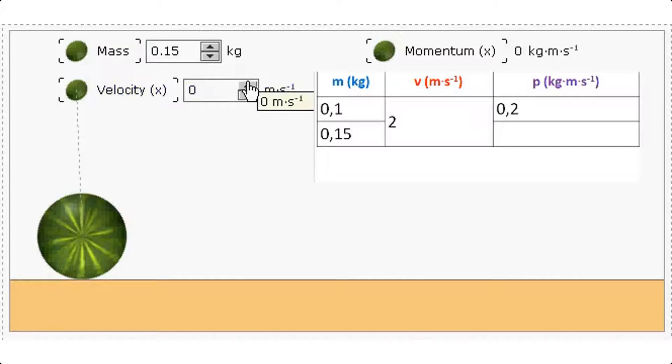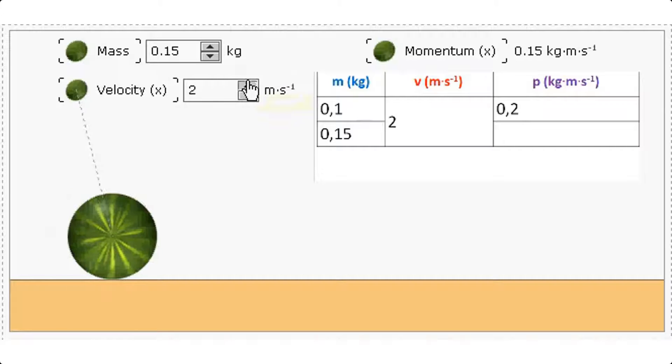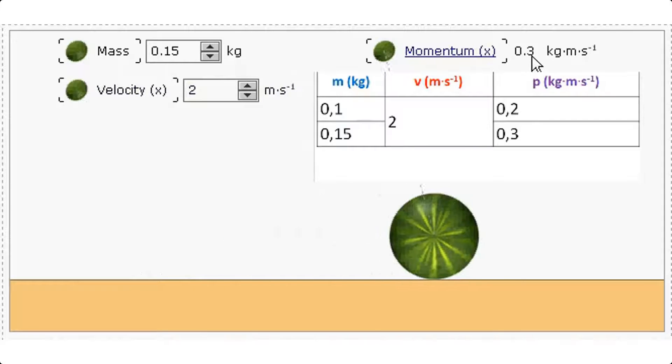Let us give this fruit also a velocity of 2 meters per second. Remember that for the 0.1 kilogram orange the momentum at this velocity was 0.2 kilogram meter per second. Do you think that for this heavier fruit the momentum will be greater or less for the same velocity? 0.3 kilogram meter per second.